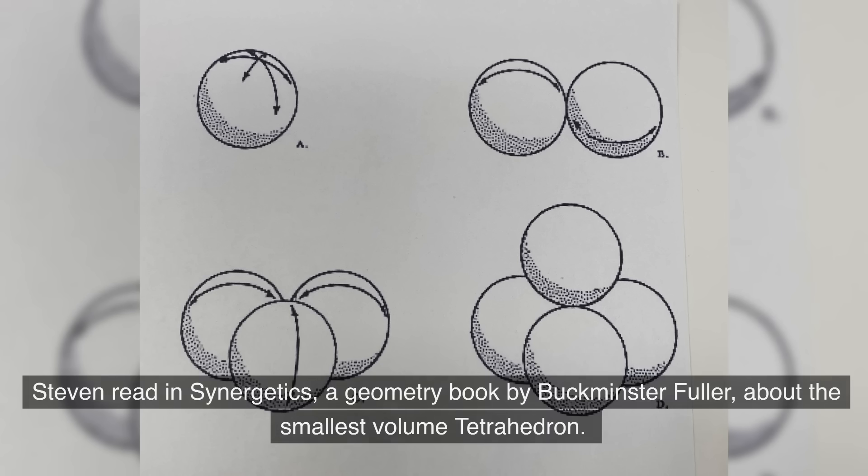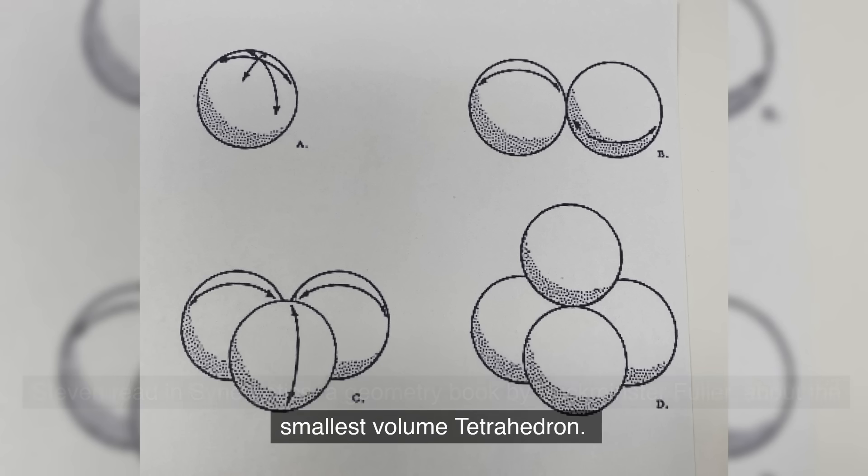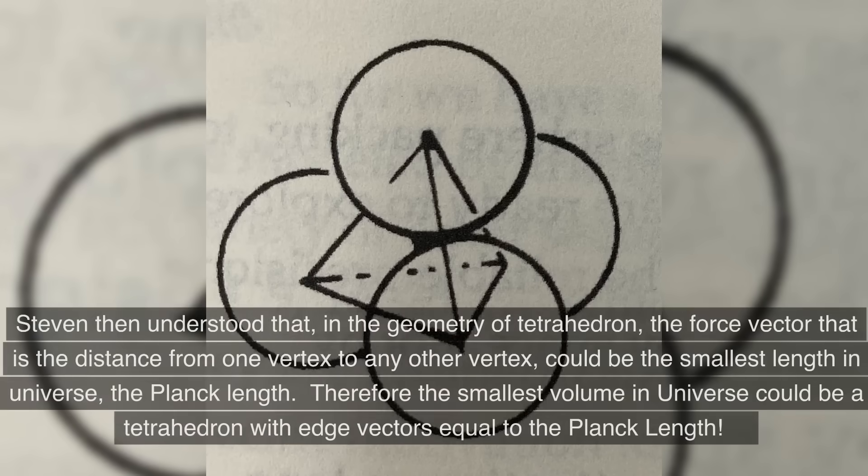Stephen read in Synergetics, a geometry book by Buckminster Fuller, about the smallest volume tetrahedron. Stephen then understood that in the geometry of tetrahedron, the force vector that is the distance from one vertex to any other vertex could be the smallest length in universe, the Planck length.